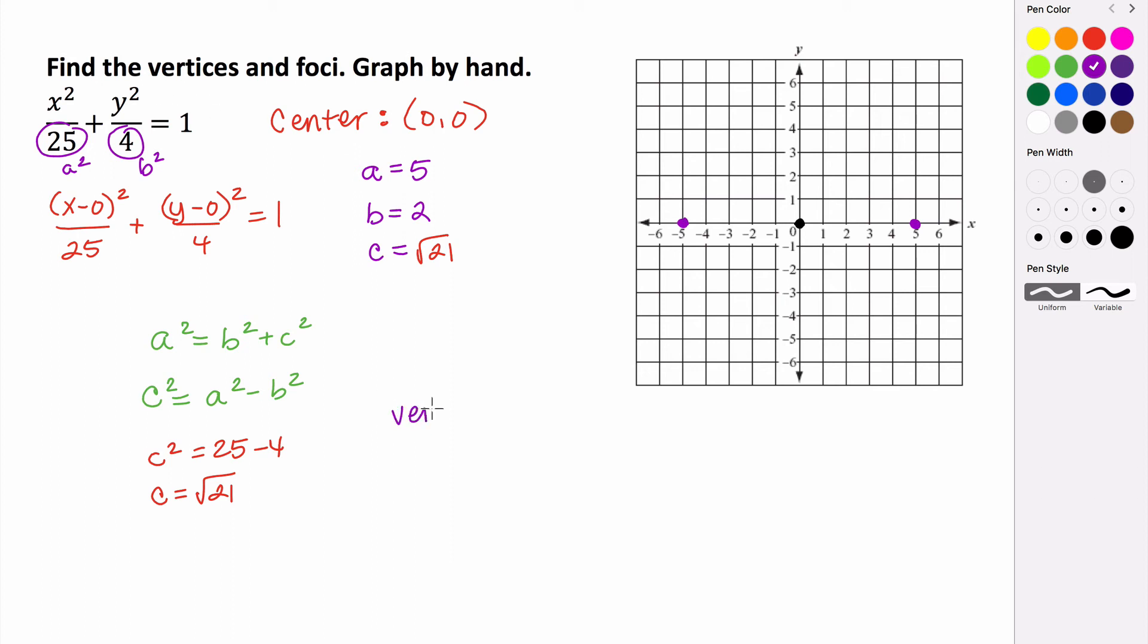So the vertices have ordered pairs of negative five comma zero and five comma zero. Remember that when the book is asking us to find the vertices, they really are only asking us for the vertices on the major axis. They don't really care about the vertices on the minor axis, what we sometimes call the co-vertices. The ordered pairs of those, though, are going to be 0, 2, and 0, negative 2. Because again, this distance is b, and we know that b is 2.